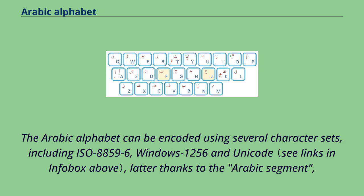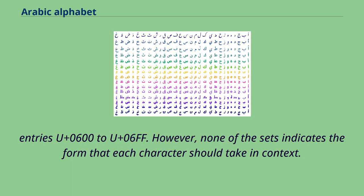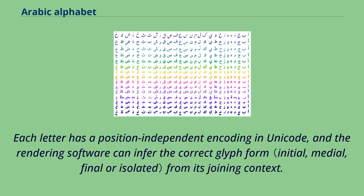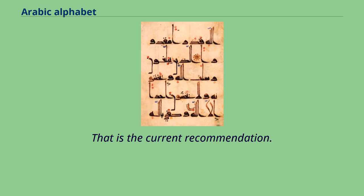The Arabic alphabet can be encoded using several character sets, including ISO 8859-6, Windows-1256, and Unicode, the latter through the Arabic segment entries U+0600 to U+06FF. However, none of the sets indicates the form that each character should take in context. It is left to the rendering engine to select the proper glyph to display for each character. Each letter has a position-independent encoding in Unicode, and the rendering software can infer the correct glyph form from its joining context.